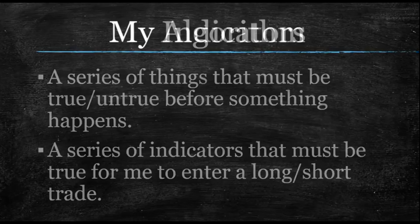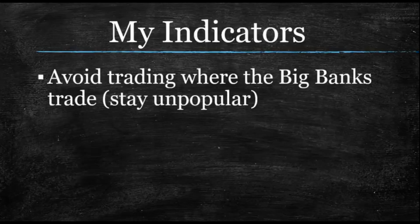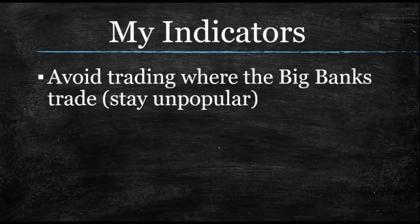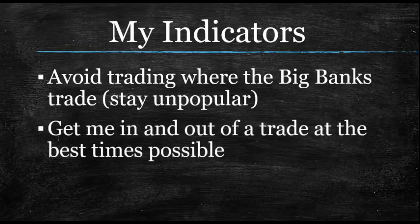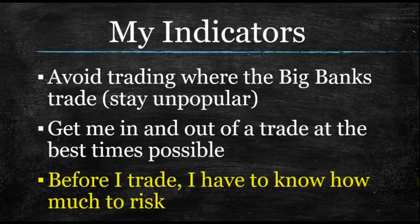As far as how I set up my algorithm, all of the indicators within it attempt to avoid trading where the big banks trade. If you've seen my videos before, you understand how important it is to stay unpopular and to avoid those hot spots where everybody else is putting in orders, because that's where the big banks like to take things the opposite way of where you intended. This is how losses happen for most people. Even though I'm staying unpopular, I still want to get in and out of a trade at the best possible times. But before any of that happens, I actually have to know how much to risk first.